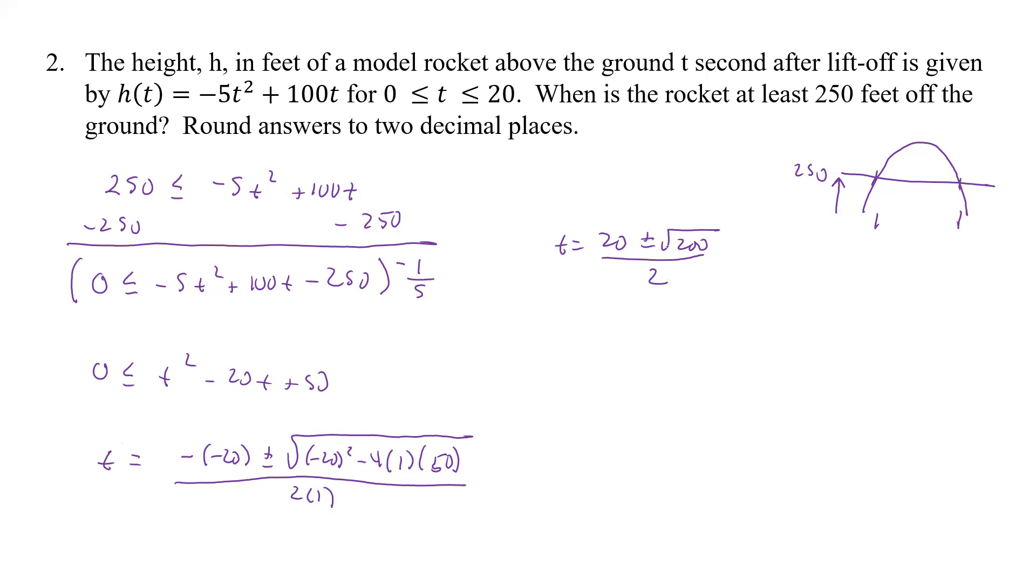Now we can take that in our calculator. And so it looks like if we do the positive, it's going to be 17.07. And if we do the negative, that's going to give us 2.93. And these are seconds. Alright. Now, that means that 2.93, we're here at 17.07, we're over here. And so between those two, we are going to be greater than 250. So we can have [2.93, 17.07], another bracket. And that interval is going to always be greater than 250.